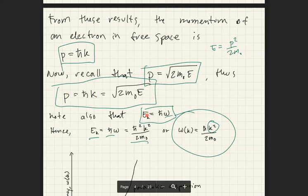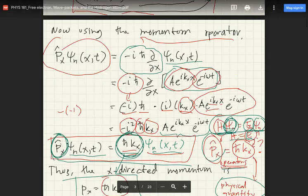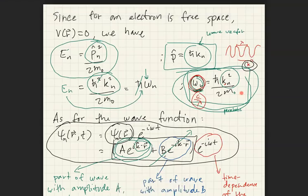Also note that the energy equals h-bar omega, where omega is the frequency. So h-bar omega equals h-bar squared k squared over 2m naught. Canceling one h-bar, we have omega(k) equals h-bar k squared over 2m naught — the same dispersion relation derived earlier. The frequency's dependence on k-vector is parabolic: as the wave vector increases, the frequency increases parabolically.